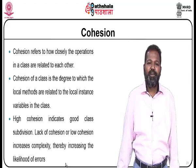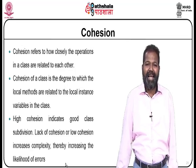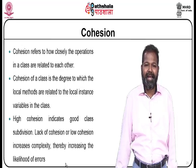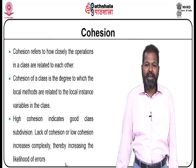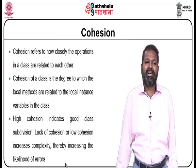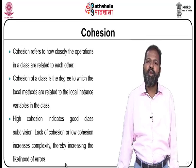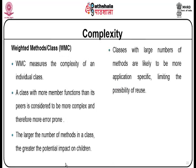Cohesion refers to how closely the operations in a class are related to each other. Cohesion of a class is the degree to which the local methods are related to the local instance variables in the class. High cohesion indicates good class subdivision. Lack of cohesion or low cohesion increases complexity, thereby increasing the likelihood of errors. Weighted methods per class measures the complexity of an individual class. A class with more member functions than its peers is considered more complex and therefore more error prone.